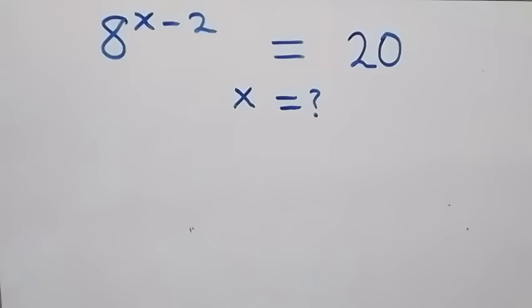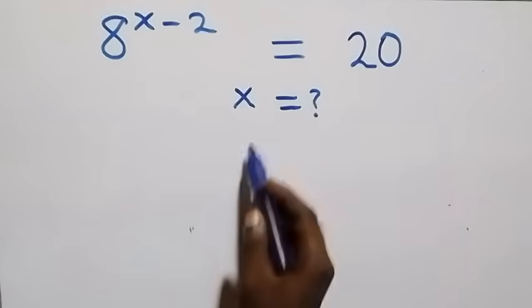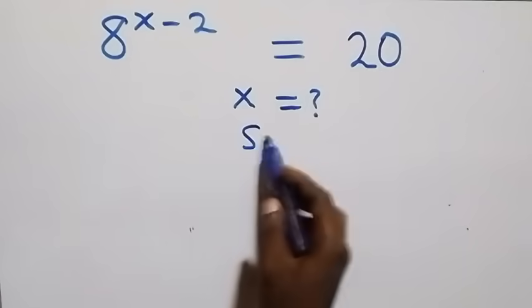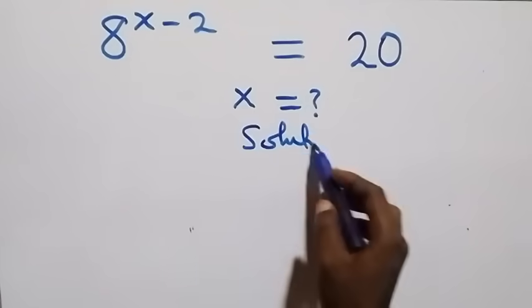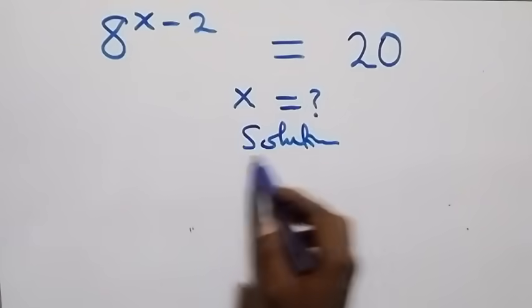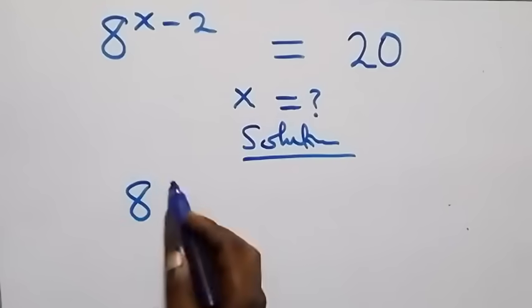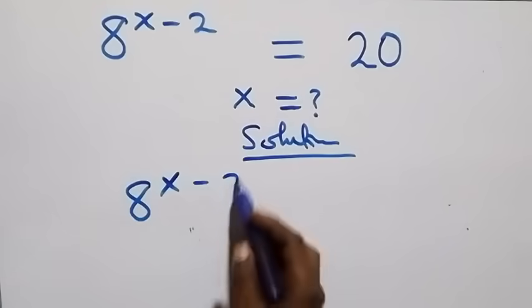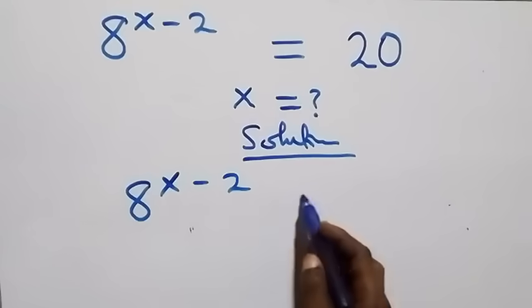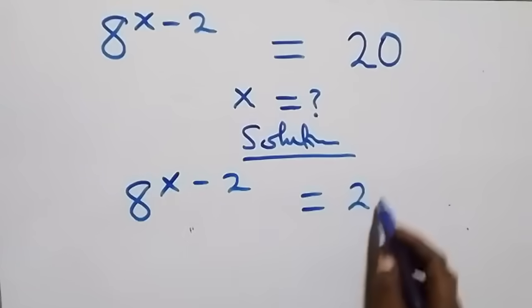Hello, you are welcome. How to solve this nice exponential equation. What is given here is 8 raised to power x minus 2 equals 20.